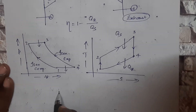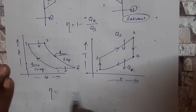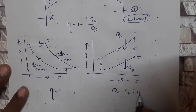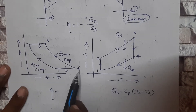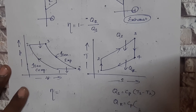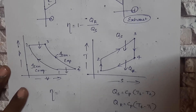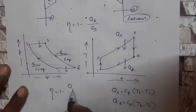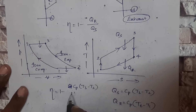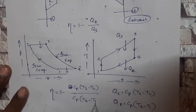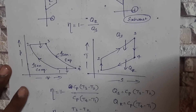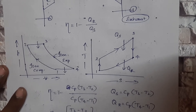The heat supplied is: qs = cp(T3 − T2), and the heat rejected is: qr = cp(T4 − T1). Substituting into the efficiency formula: efficiency = 1 − qr/qs = 1 − [cp(T4 − T1)] / [cp(T3 − T2)], which simplifies to 1 − (T4 − T1) / (T3 − T2).